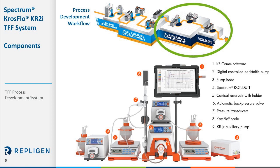The KR2i system was designed for downstream processing and can be used for UFDF application work associated with purification and formulation development, as shown in the process development workflow. The components of the KR2i system are depicted on this slide as the full suite of options and accessories available. The base system includes the main peristaltic pump drive and a Surface Pro tablet as the HMI with preloaded KFCOM software. Other add-on components include scales, up to two additional pumps, and the new Conduit device.